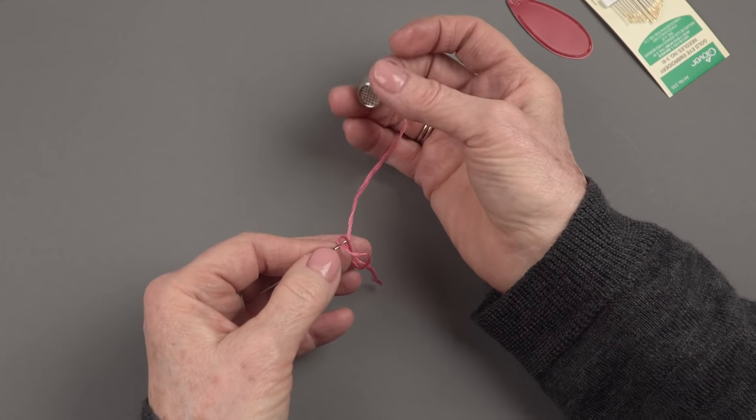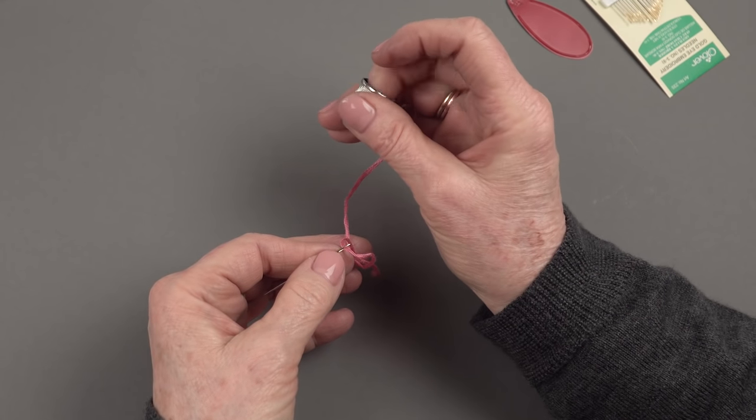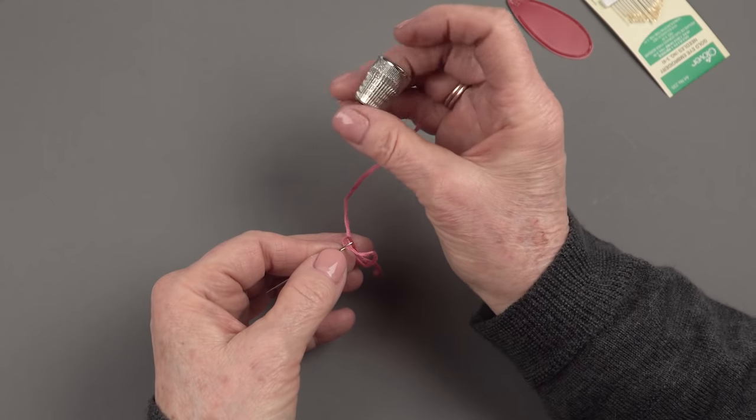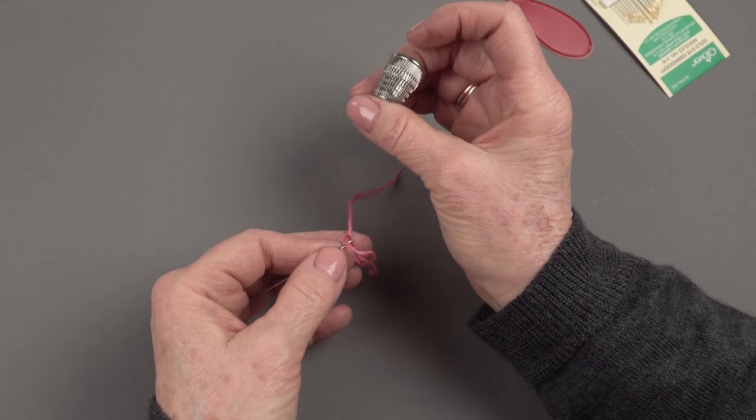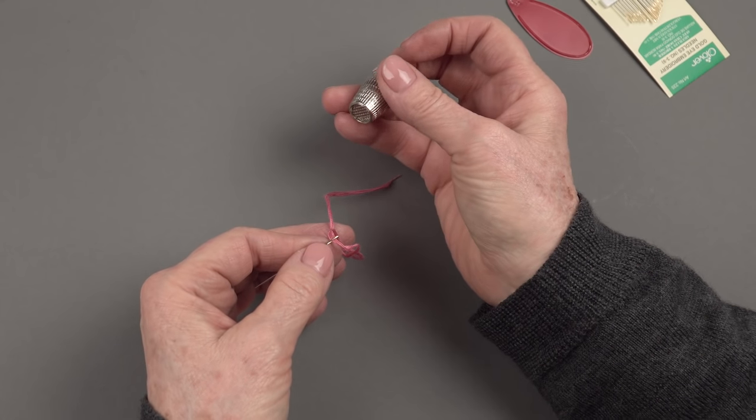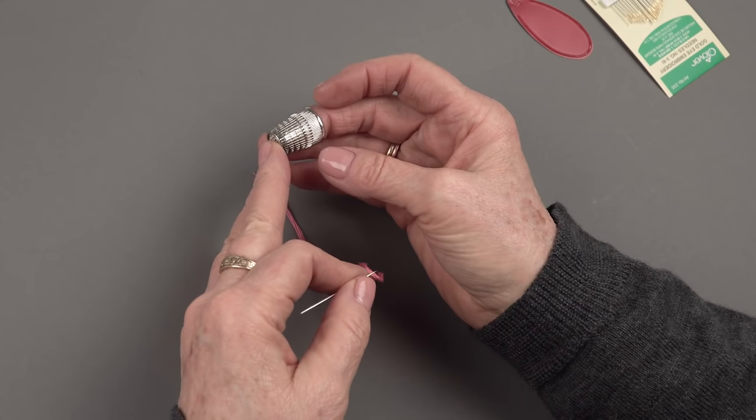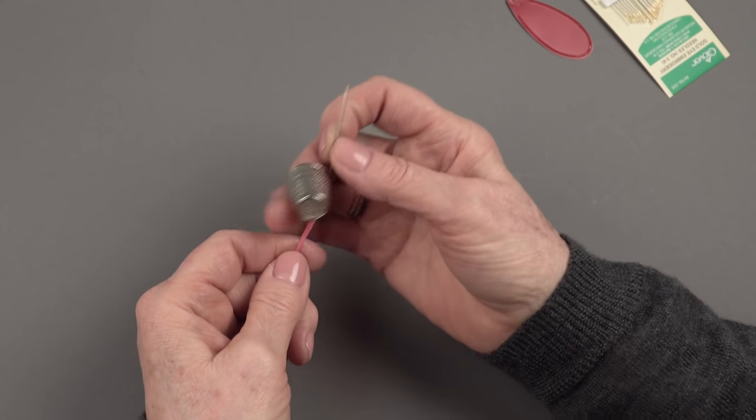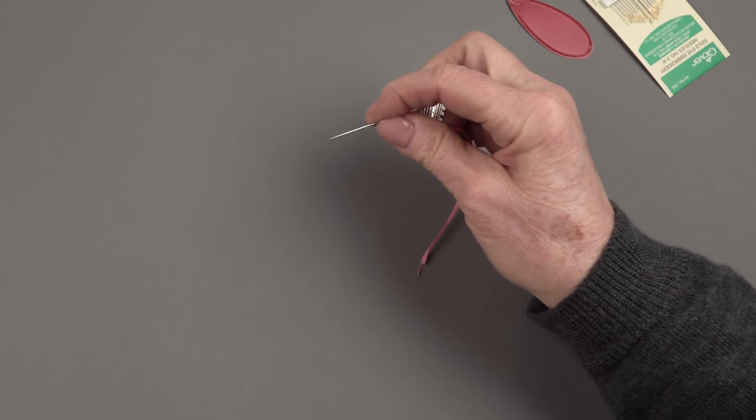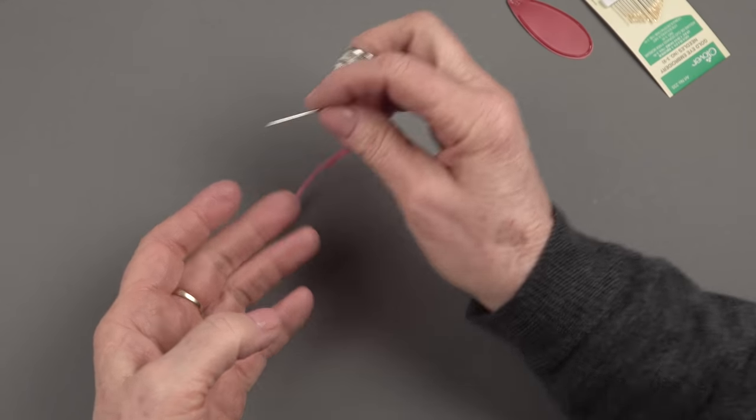These come in different sizes. You need one that fits your finger. This one's just a little big for me and it wants to slip out. You don't want it to be too tight, but you don't want it to be too loose. I highly recommend this for any kind of handwork that you're using a needle. It just makes life a lot easier. It's a little awkward at first, but you get used to it.